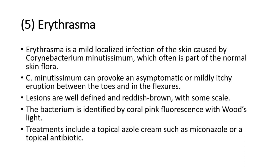Lastly, there is erythrasma. Erythrasma is a mild localized infection of the skin caused by Corynebacterium minutissimum, which is often part of the normal skin flora. This bacteria can provoke an asymptomatic or mildly itchy eruption between the toes and in the flexures. Lesions are well-defined and reddish-brown with some scale. The bacterium is identified by coral pink fluorescence with Wood's light. Treatments include a topical azole cream such as miconazole, or a topical antibiotic.